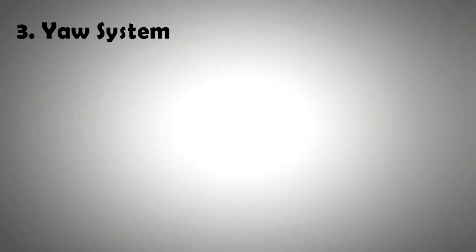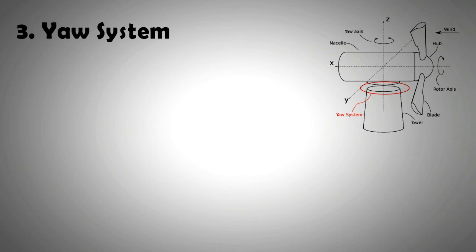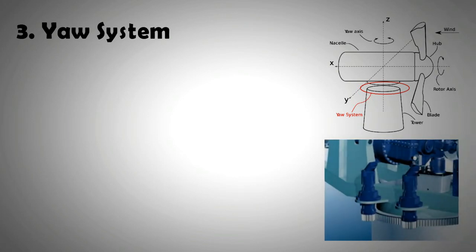Reason number three is the yaw system in the nacelle. Horizontal axis wind turbines need to have their blades oriented perpendicular to the direction of wind. Computerized and active yaw systems in large-scale wind turbines provide this functionality.